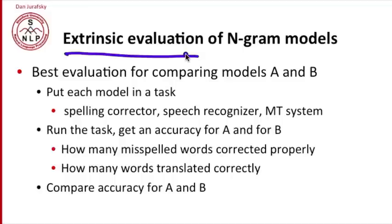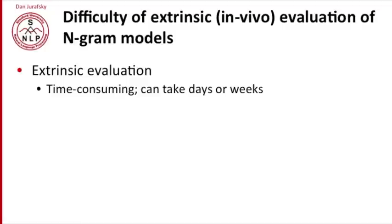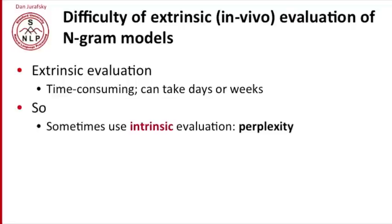This is called extrinsic evaluation — we're using something external to the n-gram model itself and looking at performance on that external task. It's also called in vivo evaluation. The problem is that it's time consuming. In many cases this can take days or weeks for a modern machine translation or speech recognition system. Running evaluations can often be extremely slow. So instead, what we sometimes use is an intrinsic evaluation — something intrinsically about language models themselves and not about any particular application.